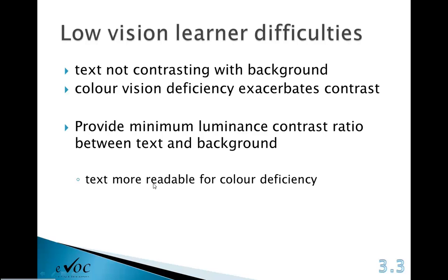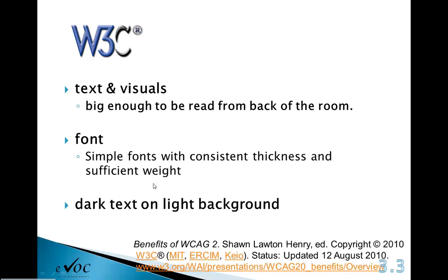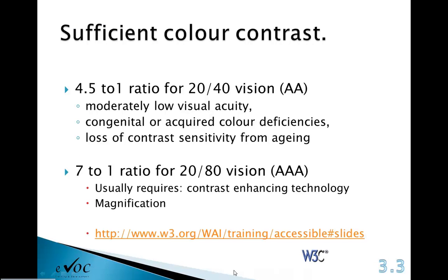There are luminance contrast ratios you need to be aware of when looking at contrast, and there's a lot of information about that on the linked website. For people with AA or 20/40 vision, you need a 4.5 to 1 ratio for luminance. A 7 to 1 ratio is required for 20/80 vision, which is called AAA vision. Usually when working with these specifications, you'd be collaborating with the person with a sight impairment and they'd be providing more information to you.